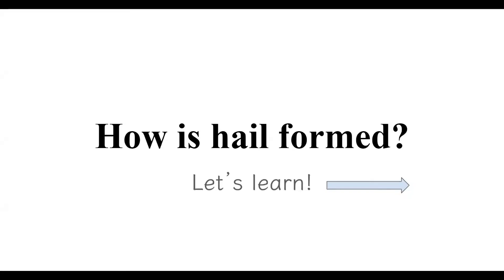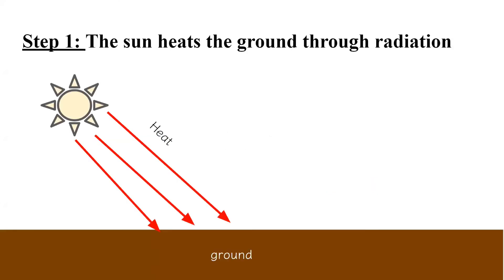How is hail formed? Well, let's learn. Step one: The sun heats the ground through radiation. Radiation is when heat is transferred through electromagnetic waves.